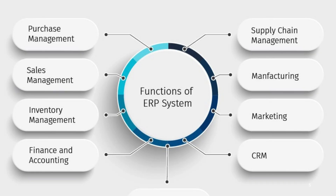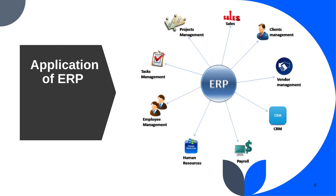Data management: ERP systems serve as centralized repositories for storing and managing critical business data, maintaining a single source of truth for all data related to transactions, operations, and decision-making, ensuring data consistency, accuracy, and reliability. Automation: ERP systems automate routine and repetitive tasks across different business functions, reducing manual effort and minimizing errors. By automating workflows, approvals, and notifications, ERP enhances operational efficiency and productivity while freeing employees to focus on more strategic tasks.